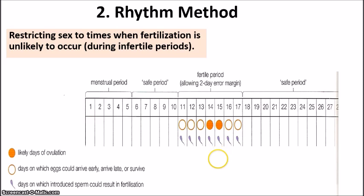You have to take into consideration that sperm can live up to five to seven days within the female reproductive system — that is why there is an error margin. Although the egg may be released on day 14 or 15, if you have sex on day 11 there is still a high risk of getting pregnant. Following the fertile period, since the egg only lasts about 24 hours after ovulation, a second safe period then follows.